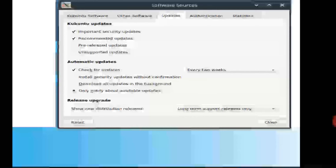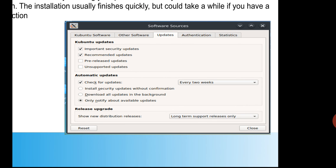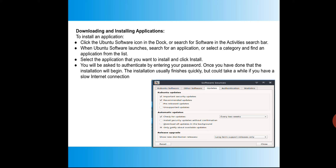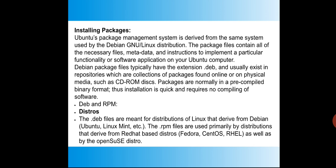A separate software sources window is provided for checking updates. This is not command-line based — it is from the Ubuntu Software Center GUI. Next is the concept of packages. In the previous video, we discussed deb and rpm. Ubuntu, Linux Mint, and Zorin come under the Debian flavor. These package types determine the file format and structure used by the operating system.